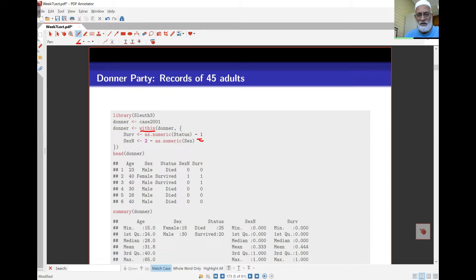Have a look at how this works. I've got here Sex is 0, 1, 0 indicating male, and Survival here is 0, 1, 0 indicating Died and 1 indicating Survived. And here is the summary of the data.